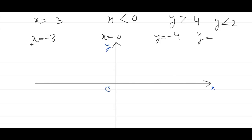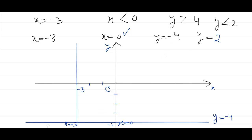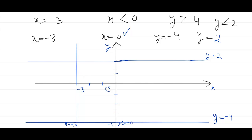The first equation is x is equal to minus 3. We have drawn the x equals minus 3 line — this vertical line is x equal to minus 3. Similarly, we draw x equal to 0; this y-axis is the x equals 0 line. The third line is y equal to minus 4, and the fourth is y equal to 2. So we have drawn sketches of all four lines.